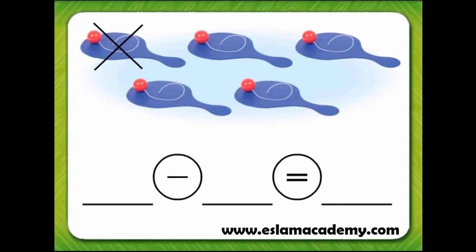What number goes in the first blank of the subtraction sentence? The first number in a subtraction sentence is the total number of objects. There are one, two, three, four, five paddle balls in all. So, we'll write five in the first blank.